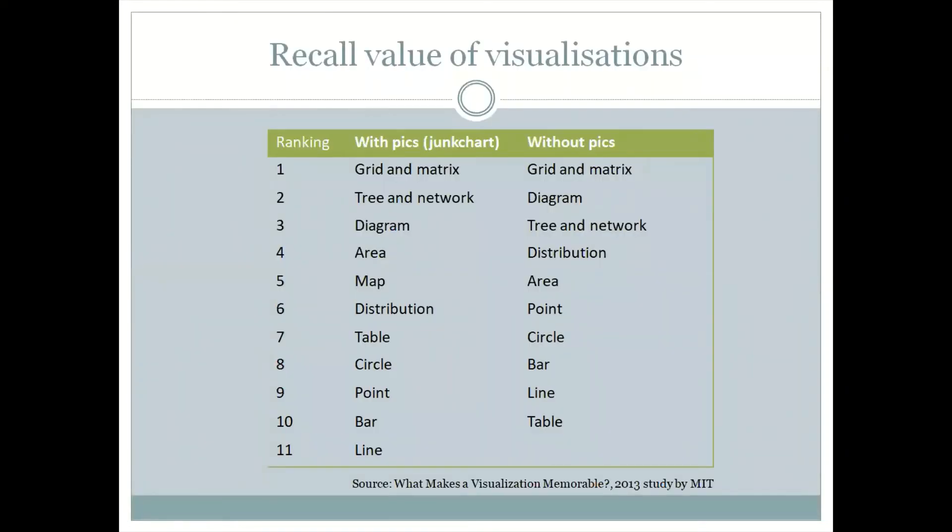This is the list of the MIT study. What they had done was they made a distinction between visualizations with images in it—which is junk charts—and ones without images. If you look at it, the top three basically remain the same, and towards the end there are some changes, but primarily it remains the same. Grid matrix, good; tree and network, good; diagrams, good. Diagram without pics go up further because you don't have any visual element.